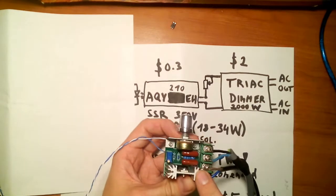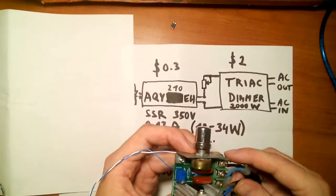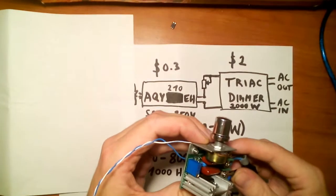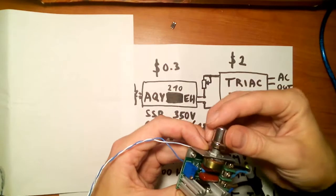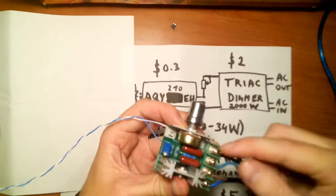This can dim or regulate up to 2kW. And basically it has a pot which can be used to regulate the output voltage.